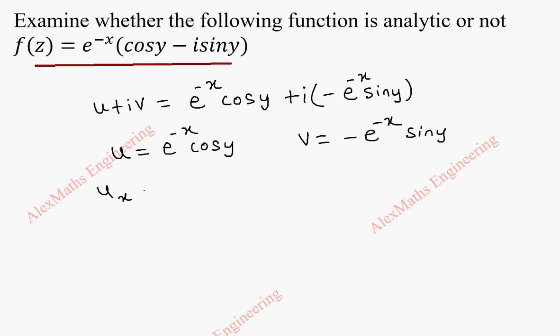Now we have to find u_x which is the partial derivative of u with respect to x. So derivative of e power minus x is e power minus x into minus 1 and cos y is constant.